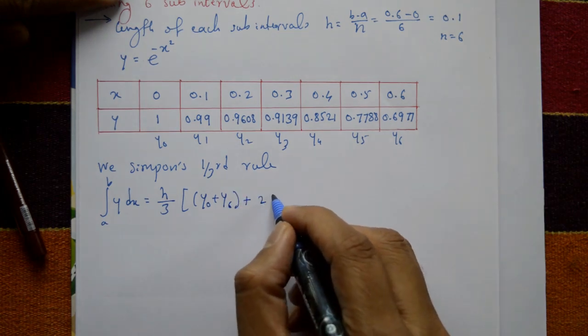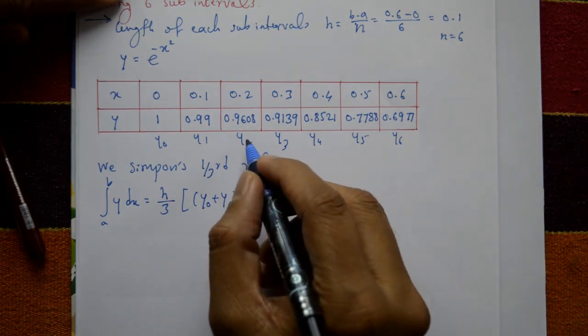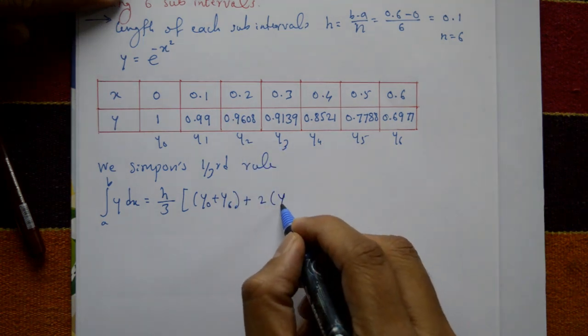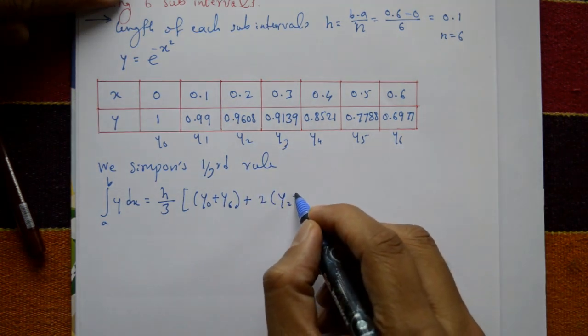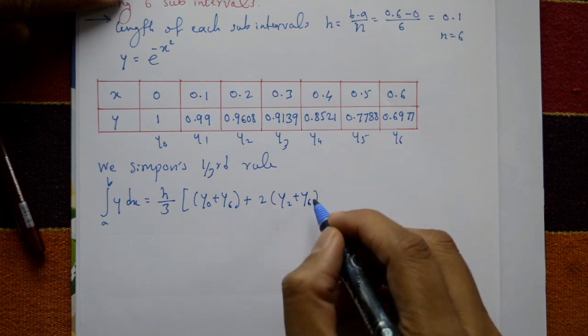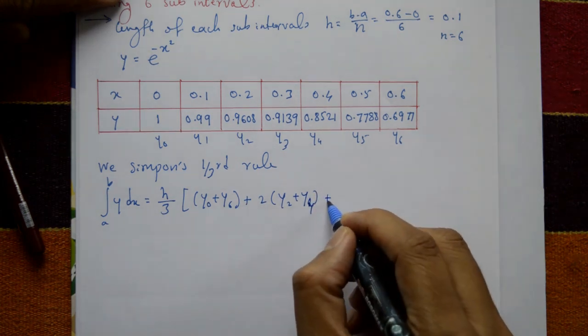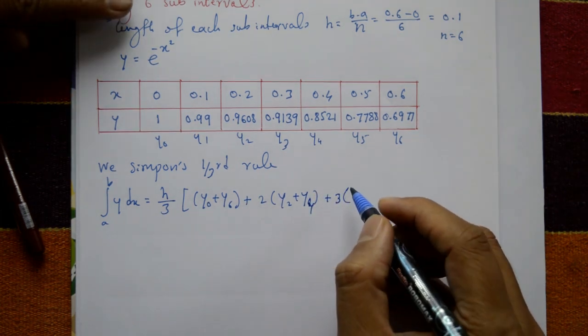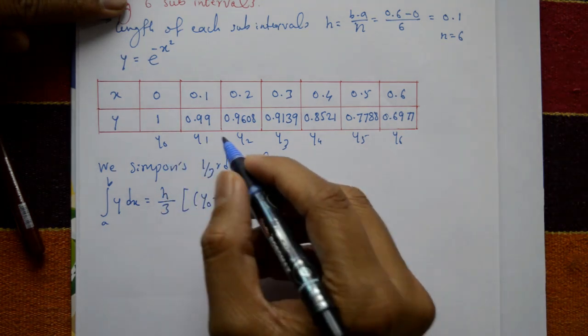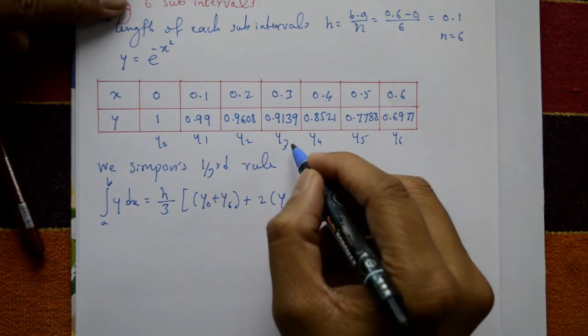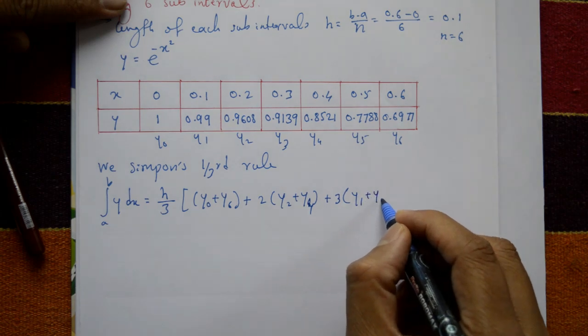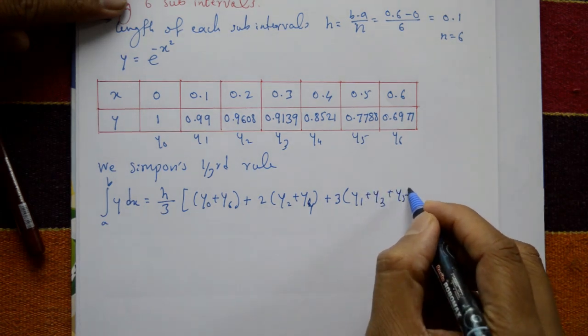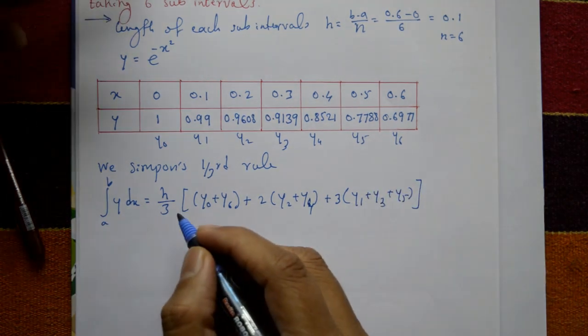Plus 2 times the even numbers. Even numbers means y2 and y4. Don't repeat the values. Plus 4 times the remaining variables. y0 is done, y1, y2 is done, so y3 and y5. Plus 4(y1 + y3 + y5).